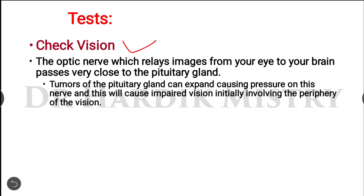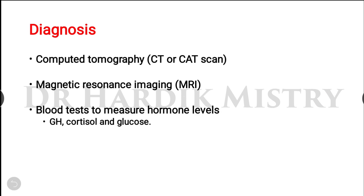The optic nerve, which relays images from the eyes to the brain, passes very close to the pituitary gland. Pituitary tumors can expand, causing pressure on the optic nerve and impairing vision, initially involving the peripheral field of vision. Therefore, a vision test must also be performed. Diagnosis includes CT or CAT scan, MRI, and blood tests to measure GH, cortisol, and glucose levels.